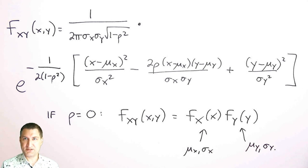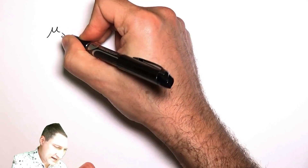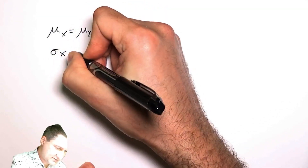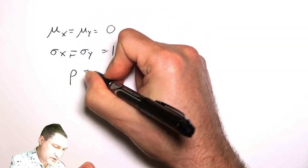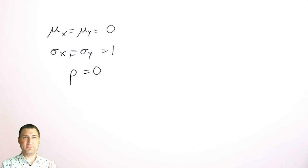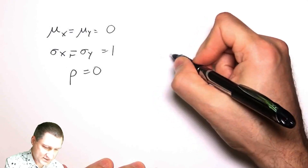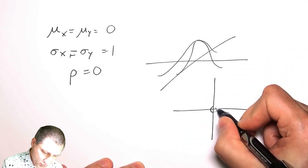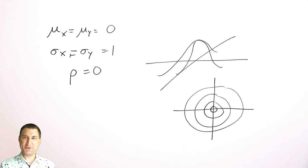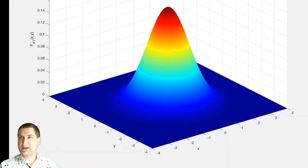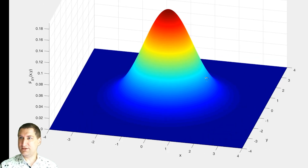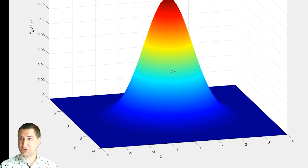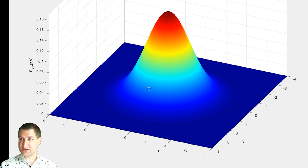Let me show you a couple of pictures of what these PDFs look like. First, when mu_x and mu_y are both 0, sigma_x and sigma_y are both 1, and rho equals 0 — there's no connection between x and y — I expect a hill that is nicely symmetric in both dimensions. Looking at it from the top in MATLAB, I get circular isocontours, just like a nice round PDF.